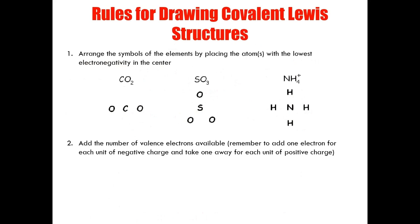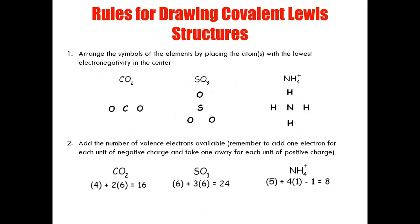The second rule is to add the valence electrons available together. Always remember to add one electron for a negative charge on your compound and remove one electron for a positive charge — a negative charge means the compound has gained an electron and a positive charge means it has lost one. For carbon dioxide, carbon has four valence electrons and oxygen has six; with two oxygens that gives a total of 16 electrons. For the ammonium ion, instead of nine, I subtracted one electron due to the positive charge, leaving eight electrons to work with.